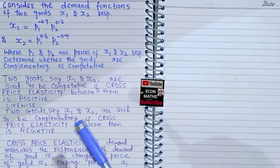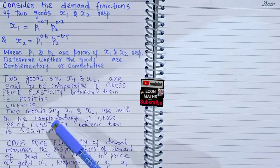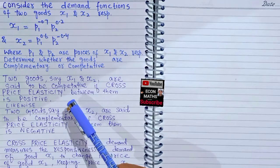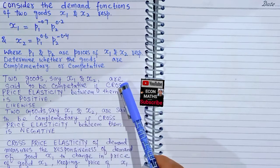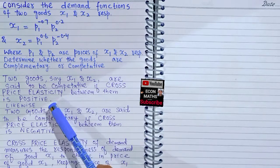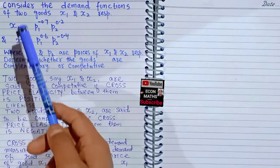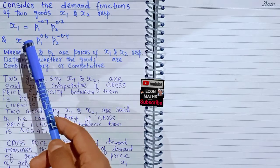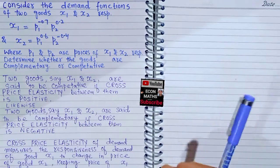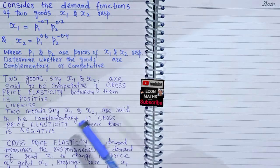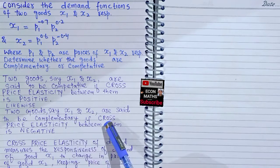Two goods x1 and x2 are said to be competitive or substitutes of each other if the cross price elasticity between them is positive. Likewise, two goods x1 and x2 are said to be complementary to each other if the cross price elasticity between them is negative.